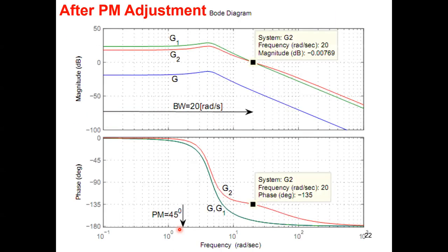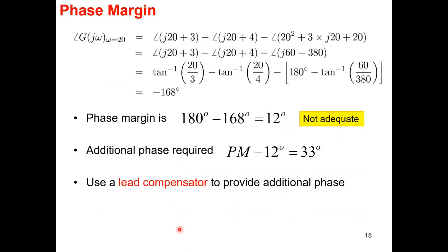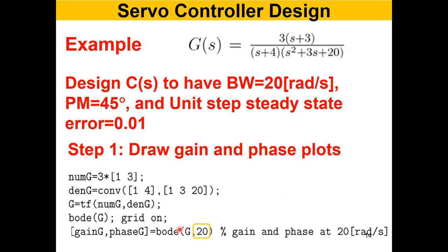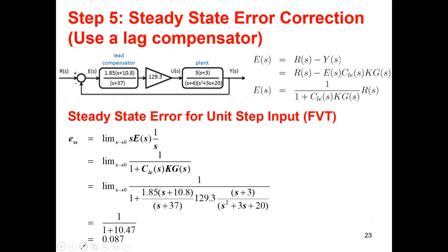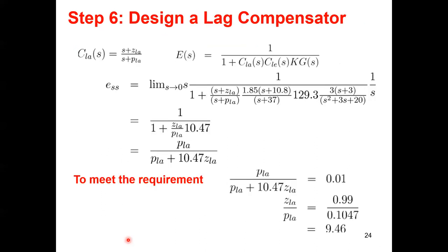The requirement is to bring the steady state error to 0.01. We currently have 0.087, approximately 0.08. So the steady state error is too big and we have to reduce it. For that, we design a lag compensator of the form (s + z) over (s + p) - one zero and one pole.